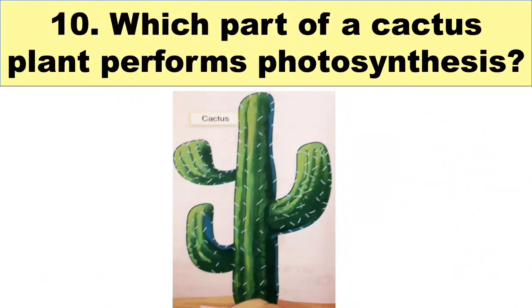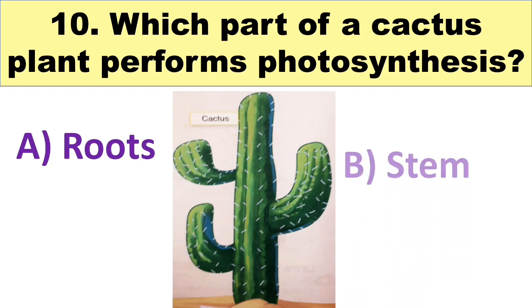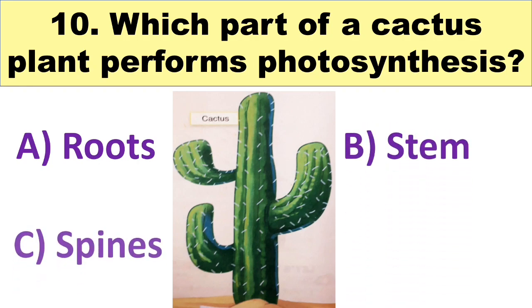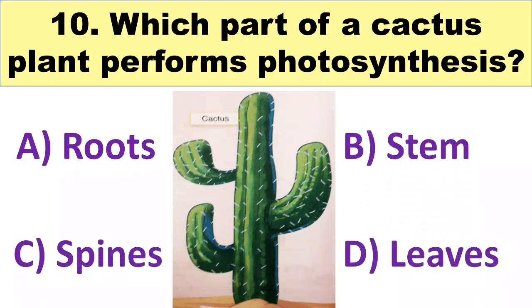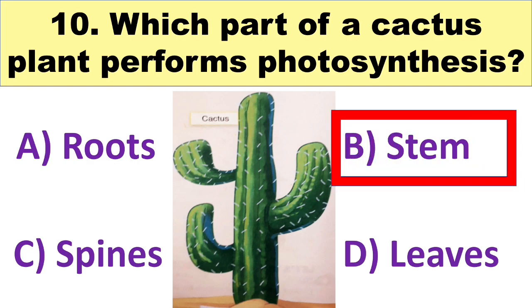The next question is: which part of a cactus plant performs photosynthesis? Your options are A. Roots, B. Stem, C. Spines, and D. Leaves. The right answer is B. Stem. In desert plants like cactus, chlorophyll is present in their stem, and the stem makes food and also stores food.